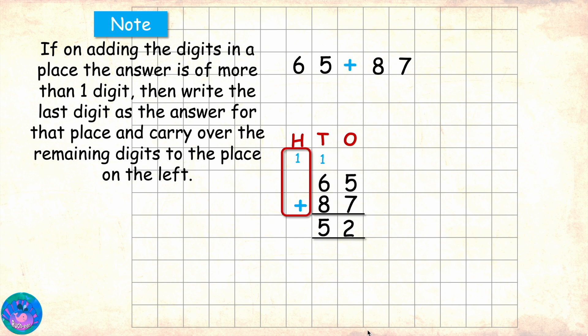Now, in hundreds place, we have only one. So, the answer for hundreds place is 1. And that gives us the sum of 65 and 87. It is 152.